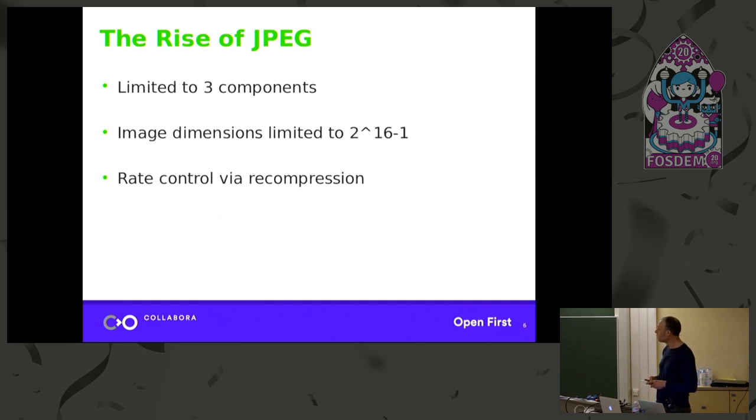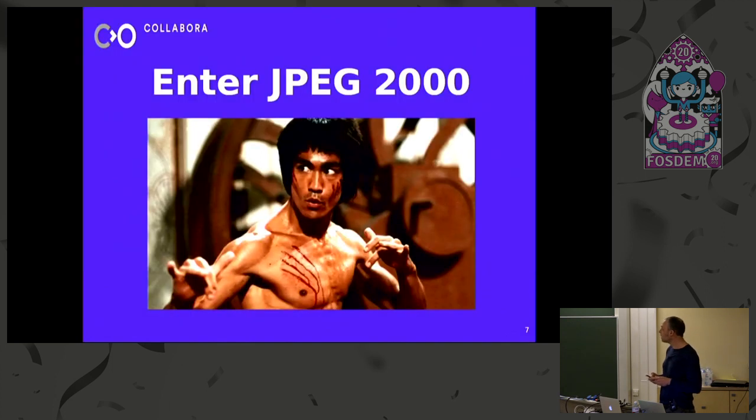More limitations are you can only use three components. There's limits on the dimensions of the image to 16-bit. And one of the big issues is rate control. So the only way to actually target a specific rate for an image is to continually recompress until you get down to that target image. And each time you recompress, you're losing data. So it's really not ideal. So those were the limits that gave rise to JPEG 2000, which was supposed to address these limitations.